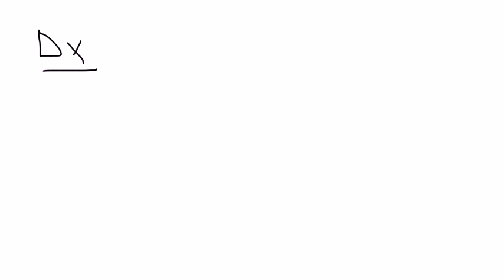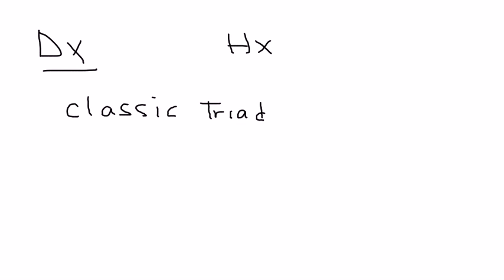How do you diagnose fat embolism? Essentially, the diagnosis has to do with the classic triad and the history. History combined with the classic triad are pretty conclusive diagnostic criteria. There are other lab tests and a long list of other things that could happen, but really these two things are the main ones.